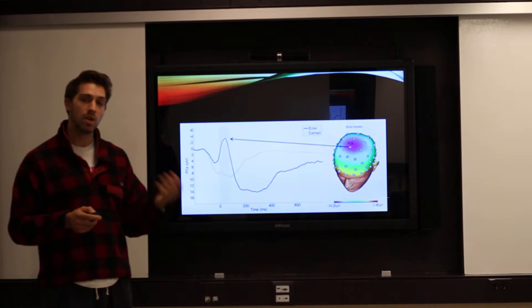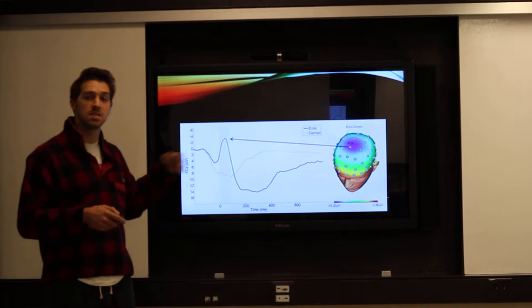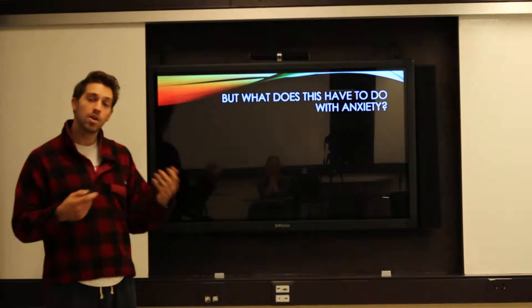When a mistake occurs, you'll see a sharp negative deflection occurring approximately 50 to 100 milliseconds after the event occurs, and this is called error-related negativity.